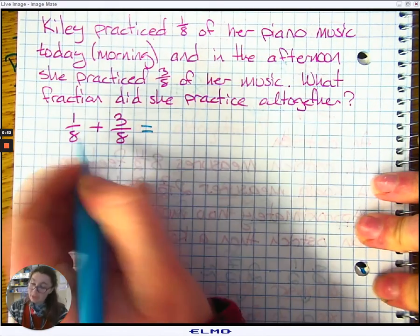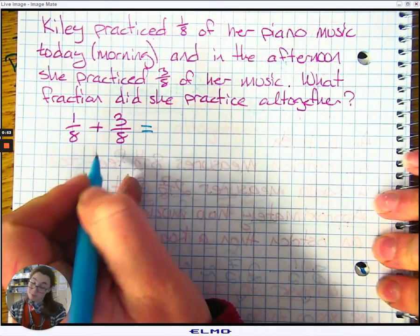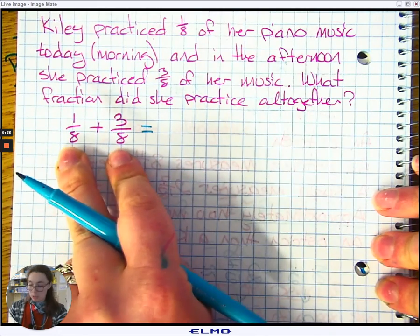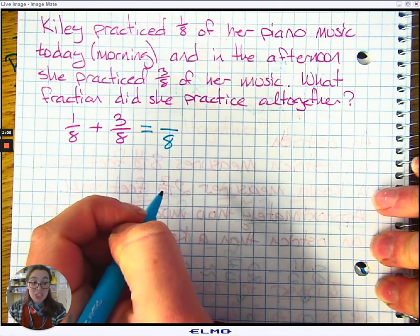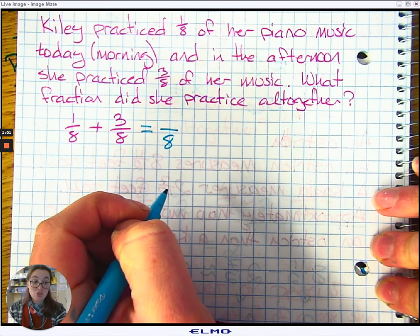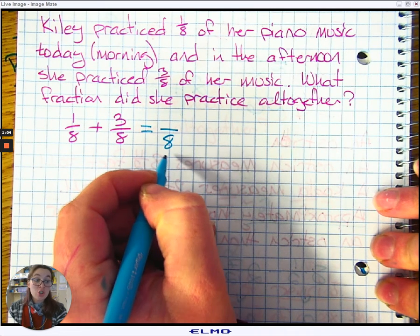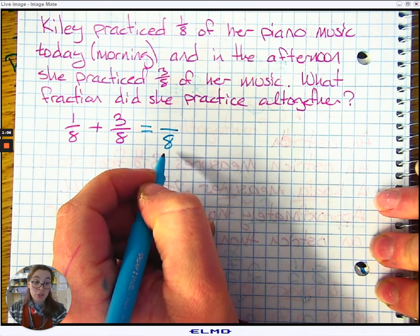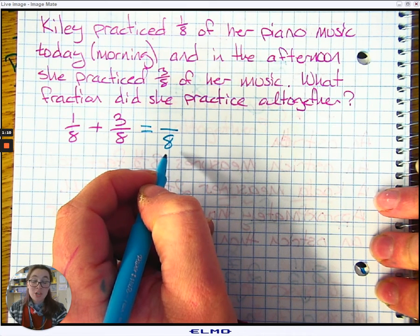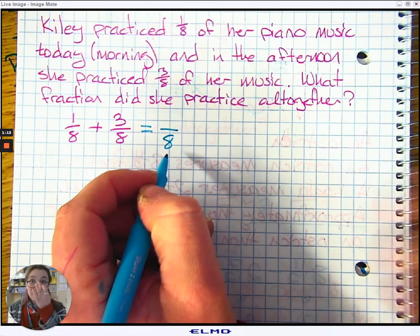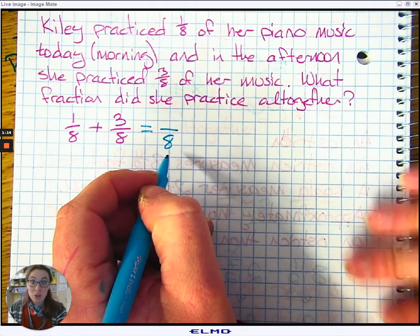All we have to do here is add the numerators. If the denominators are the same, we don't have to do anything to them. They still are the same. Do not add the denominators. Do not write 16 here. Do not add the denominators. Never add or subtract your denominators when you are adding or subtracting fractions. Do not do it.